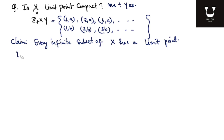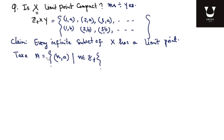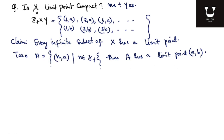For the sake of understanding, I will take A to be the set of elements of the type (n, a) such that n is in Z+. Then this is an infinite subset of X. I want to show that it has a limit point. My claim is that A has a limit point, say (n, b). To show that this point is a limit point of A, I have to show that every open set containing (n, b) intersects A at some point other than (n, b).